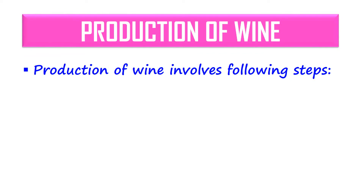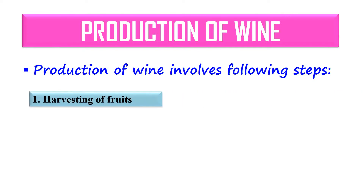Now let's discuss the production of wine. Wine is the product of grapes obtained after alcoholic fermentation by yeast. Technically, it is a transformation of sugars of grapes by yeast under anaerobic conditions — meaning the absence of oxygen — into carbon dioxide, ethanol, and some by-products.